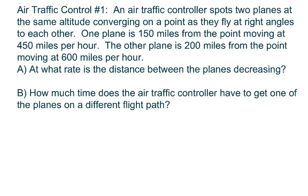Hi everyone. An air traffic controller spots two planes at the same altitude converging on a point as they fly at right angles to each other. One plane is 150 miles from the point moving at 450 miles per hour. The other plane is 200 miles from the point moving at 600 miles per hour. At what rate is the distance between the planes decreasing?